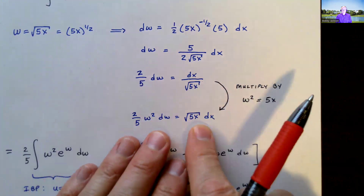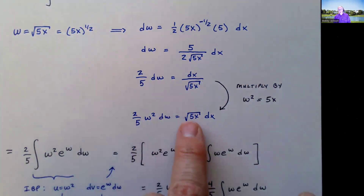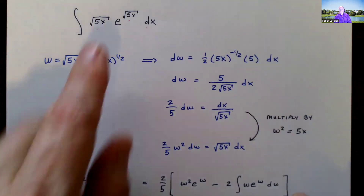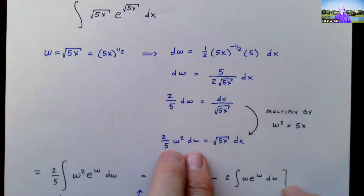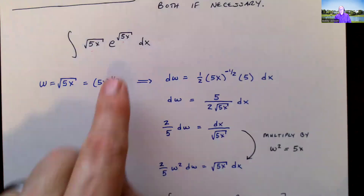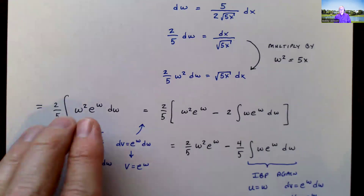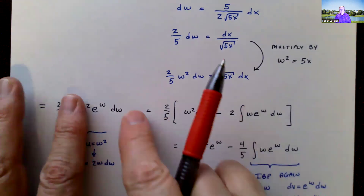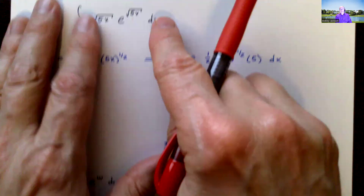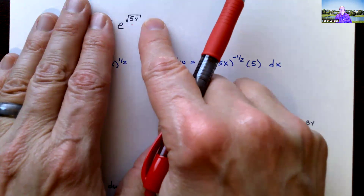So two-fifths w squared dw equals the square root of 5x dx. Now I can replace the square root of 5x dx with two-fifths w squared dw, and e to the square root of 5x becomes e to the w. Now I can find the antiderivative of e to the w — that's just e to the w. The original problem was finding the antiderivative of e to the square root of 5x; that was the issue we couldn't handle directly.